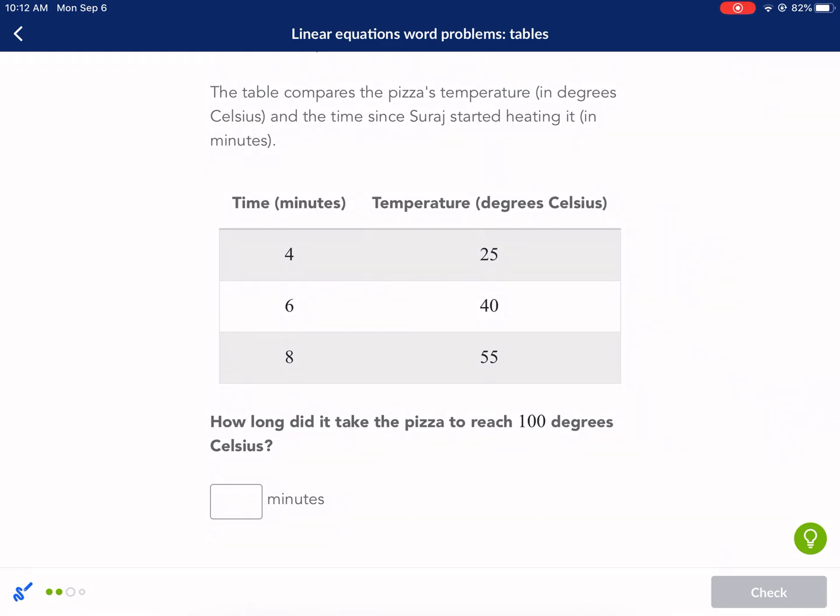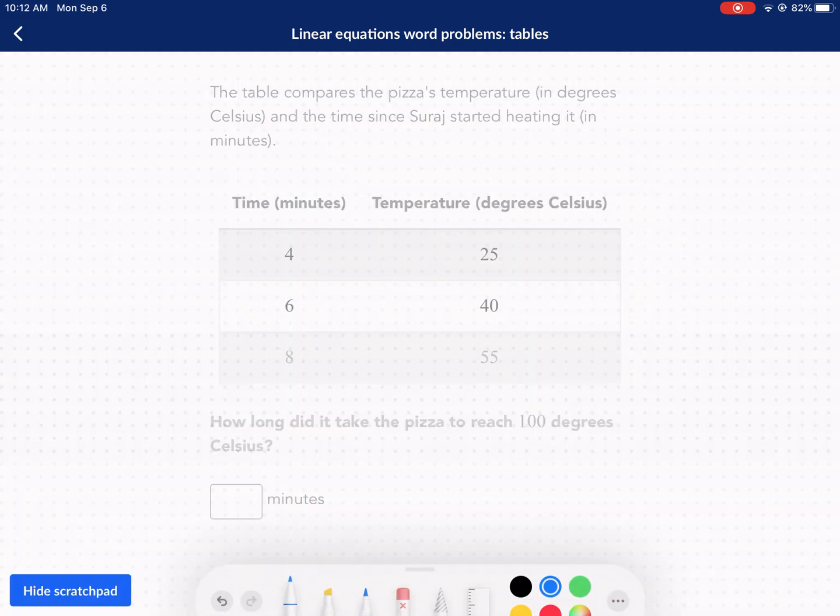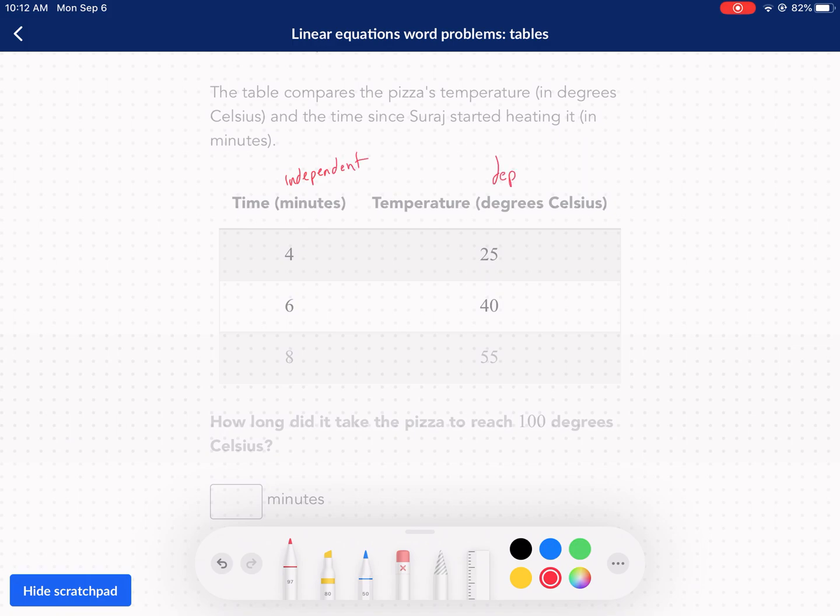The table compares the pizza temperature and the time Siraj started heating it. So we have time on the left. That's going to be our independent variable because time does not care about anything else. And then the temperature is dependent upon how much time we put in there. So independent variable four, six, eight, it's going up two. How much is our dependent variable going up. It's going plus 15 plus 15. All of these are linear. So it's 15. So every two, it's going up every two minutes, it's going up 15 degrees or for every one minute, I divide by two for top and bottom 7.5 degrees. How long did it take the pizza to reach 100 degrees Celsius?